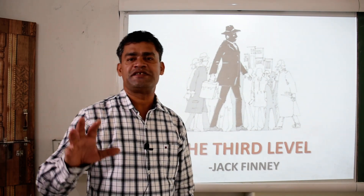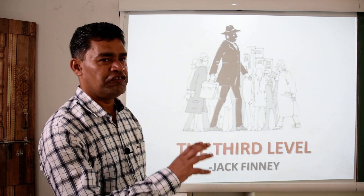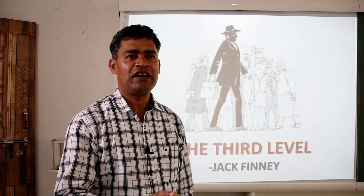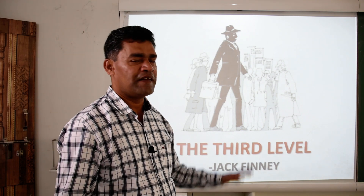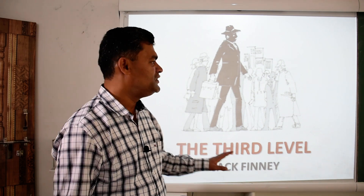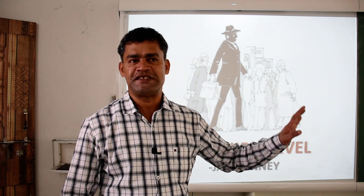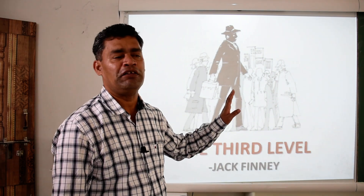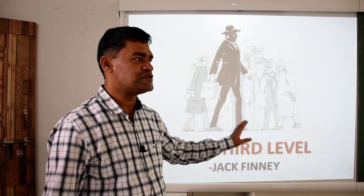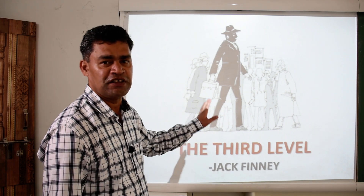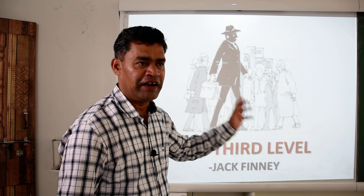As far as the syllabus is concerned, we have literature, writing skill, and reading skill. As far as literature is concerned, for the current academic year, this is the last lesson. We have already covered 14 lessons — 5 poetries and 9 prose. From the next video, we will be covering writing skill.